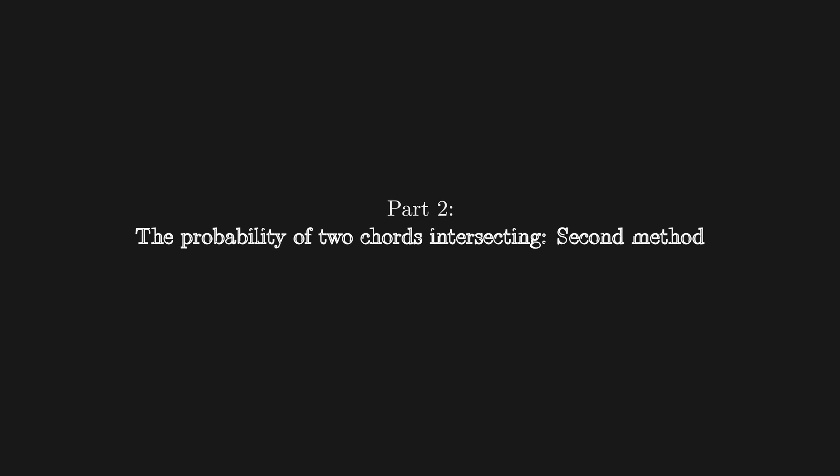Part 2: the probability of two chords intersecting, second method. Once again, we'll start with a circle and draw four random points on its circumference. We'll choose an arbitrary point and label it A. And by the setup of the problem, we know it's equally likely for A to connect to any of the other three points.